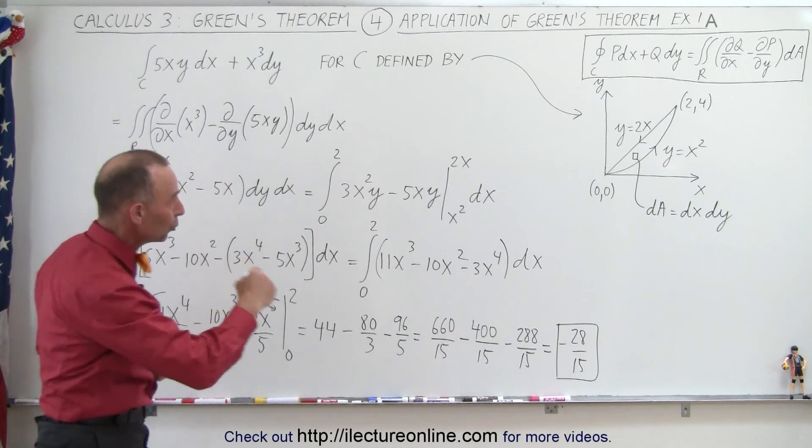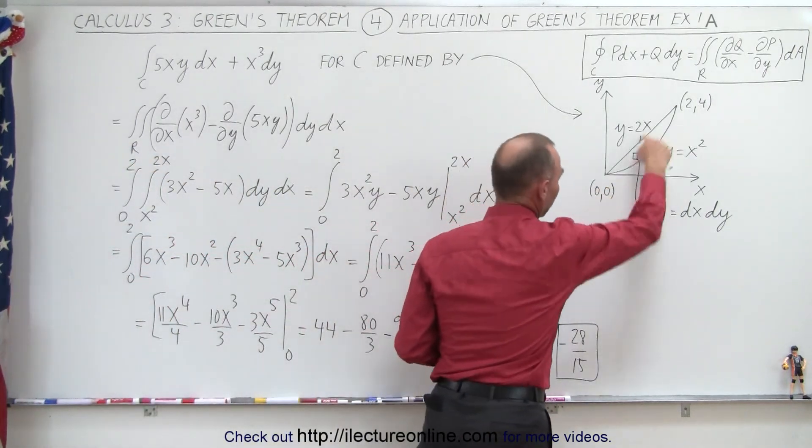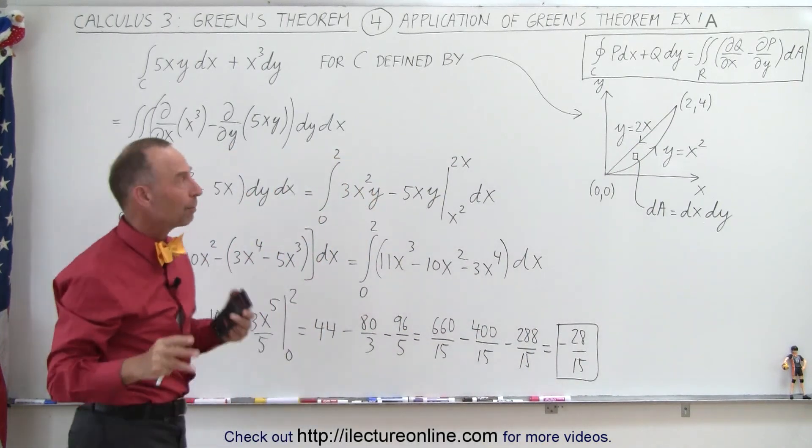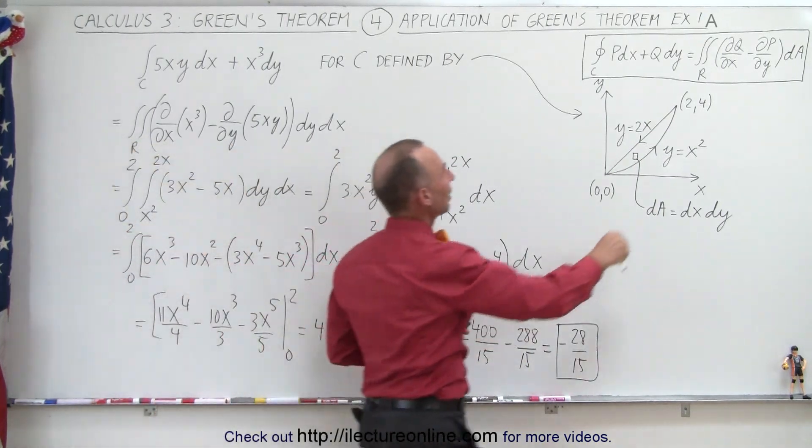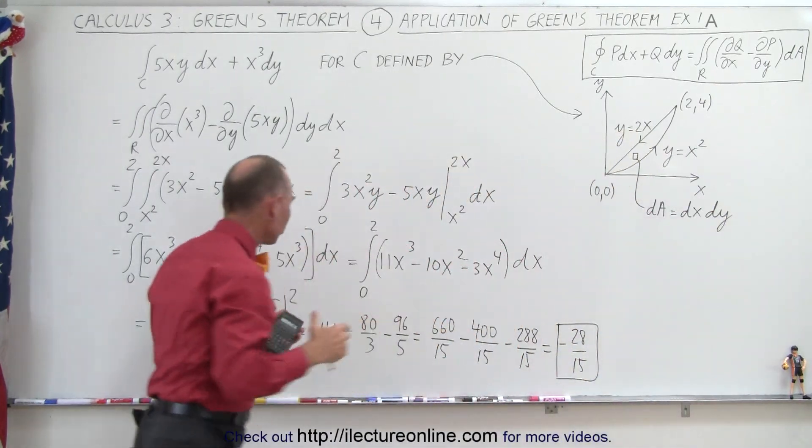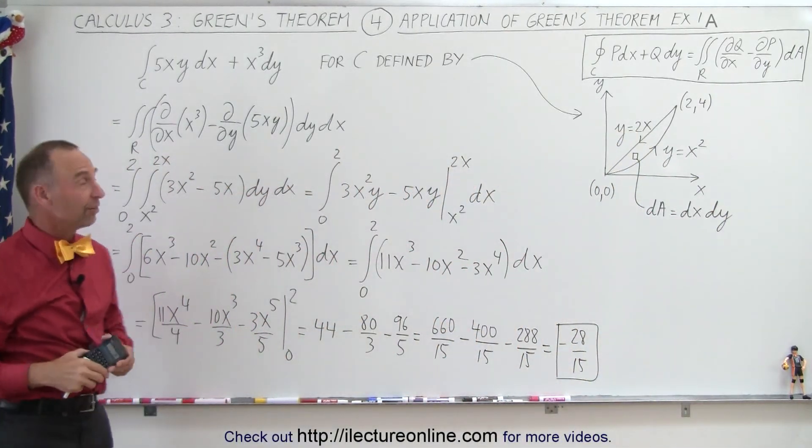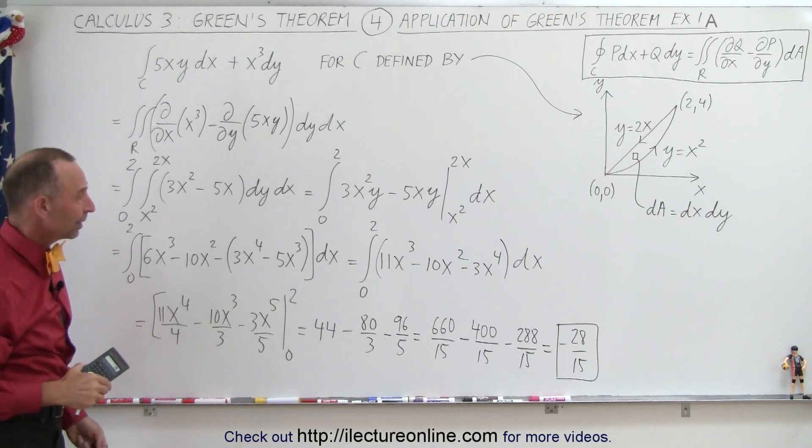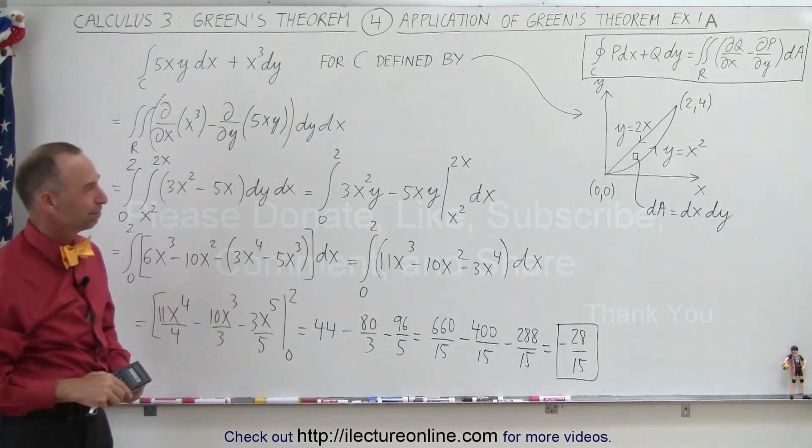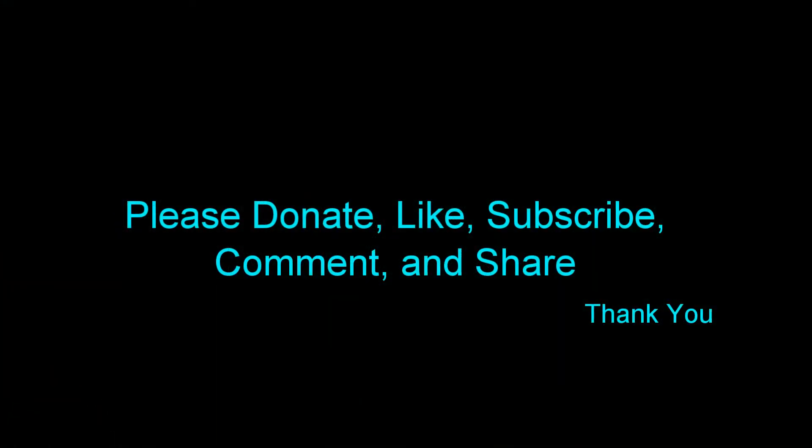But instead of actually doing the line integral and using all the parametric equations and so forth, integrating over both curves, we can simply replace that by the right side of Green's theorem. And you can see that it's much more straightforward using Green's theorem to calculate a line integral like that. And that's how it's done.